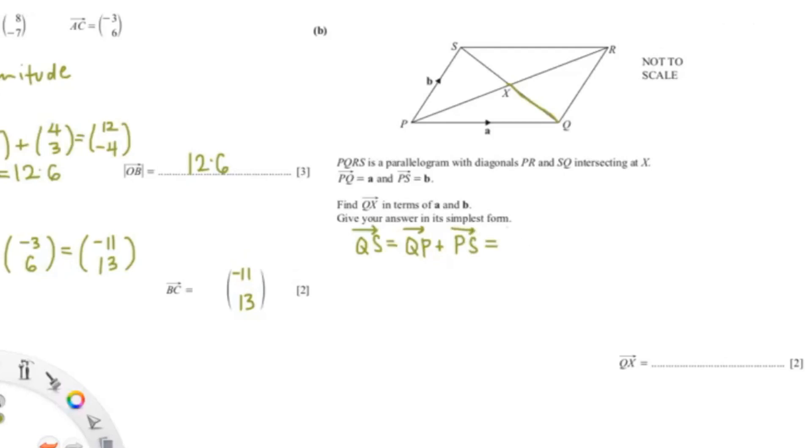Okay, so our QP is negative A because it's moving in the opposite direction. So it's negative A, and PS is positive B.